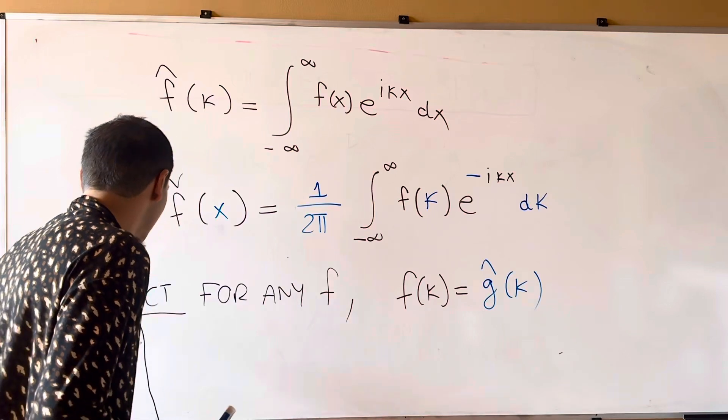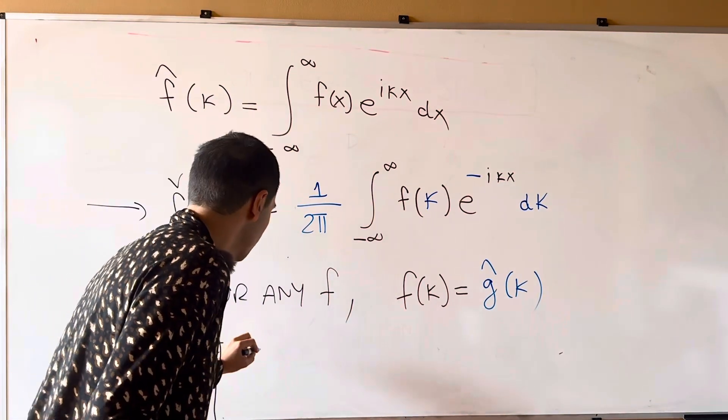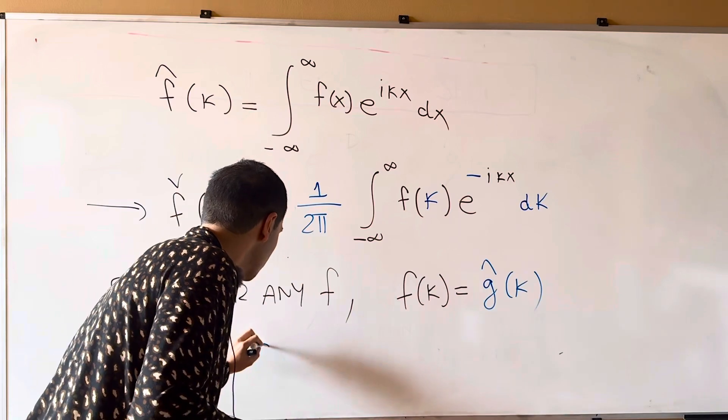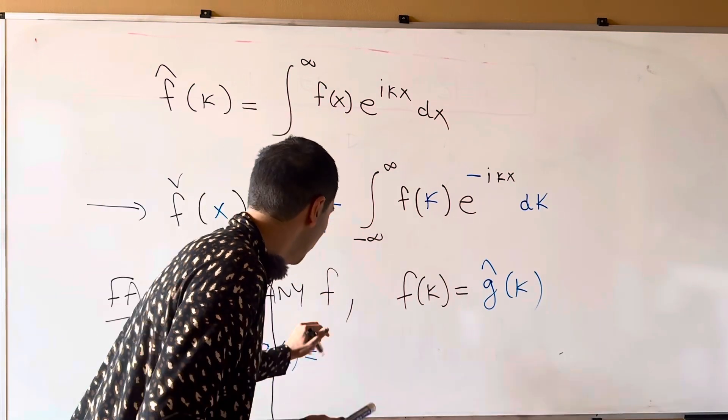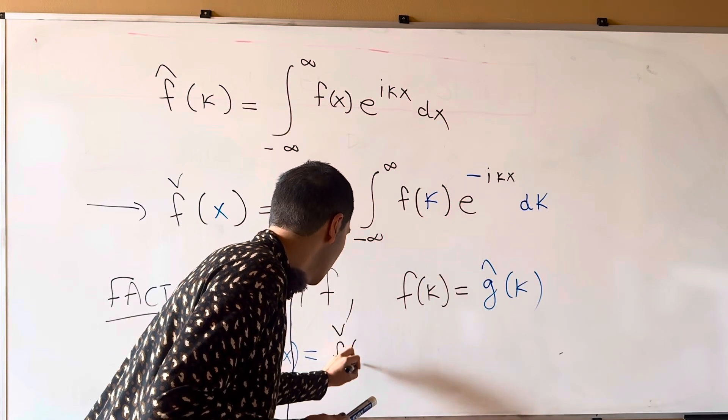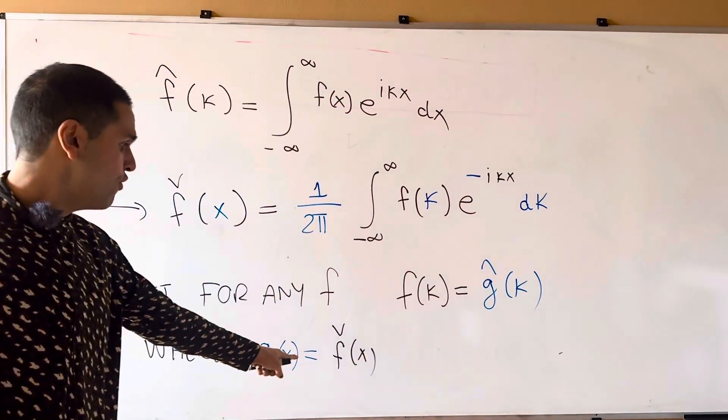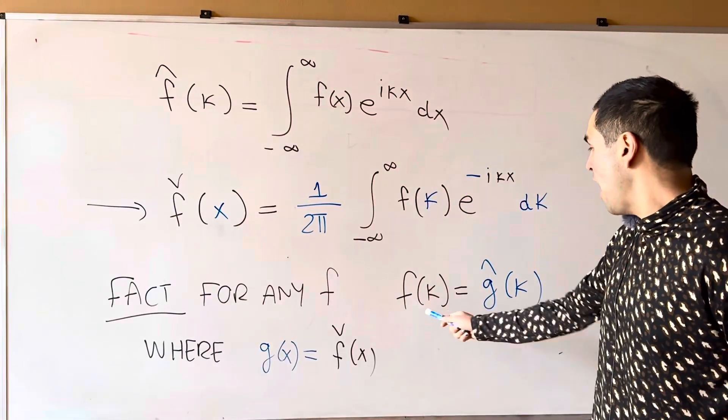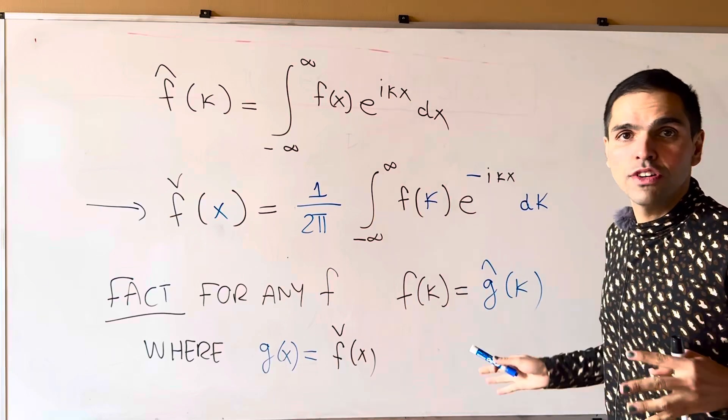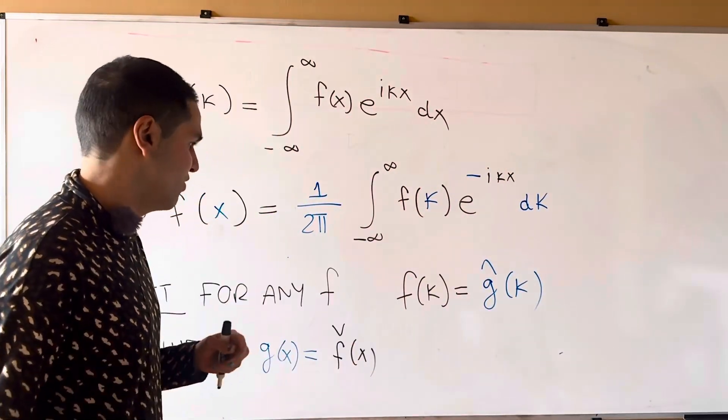So g of x is f check of x. Or if you plug in g in this equation, it implies that f is the Fourier transform of the inverse Fourier transform. So they kind of cancel out, if you wish.